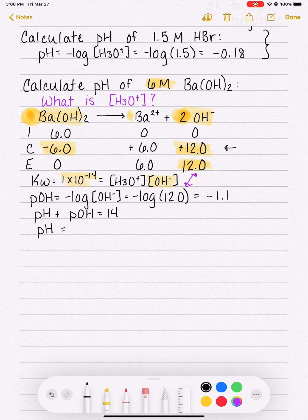So I'm plugging in the OH⁻ concentration and then solving for pOH. Negative log of 12 is negative 1.1. That's my pOH, and I know that pH plus pOH is 14. So the pH is 14 minus the pOH, 14 minus negative 1.1. So the pH of this solution is 15.1.